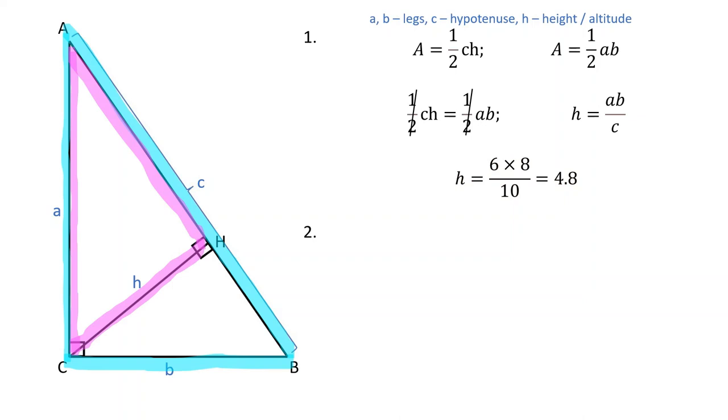If you don't remember the area formula for a triangle, there is another way to solve this problem. Triangles ACH and ABC are similar because two pairs of corresponding angles are equal.